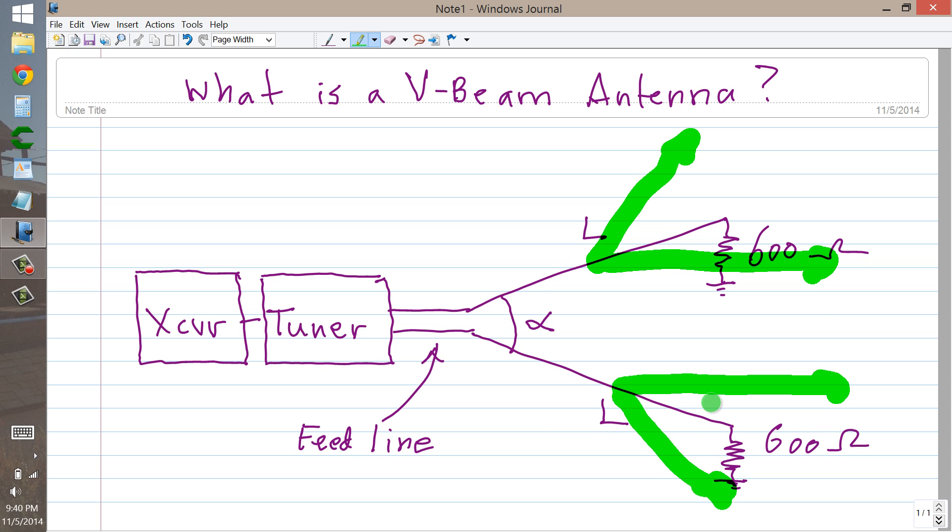Now what you're going to find is that these two lobes that send a signal from the left to the right, if the lengths and the angle are optimized, will coincide in direction and produce a super major lobe.